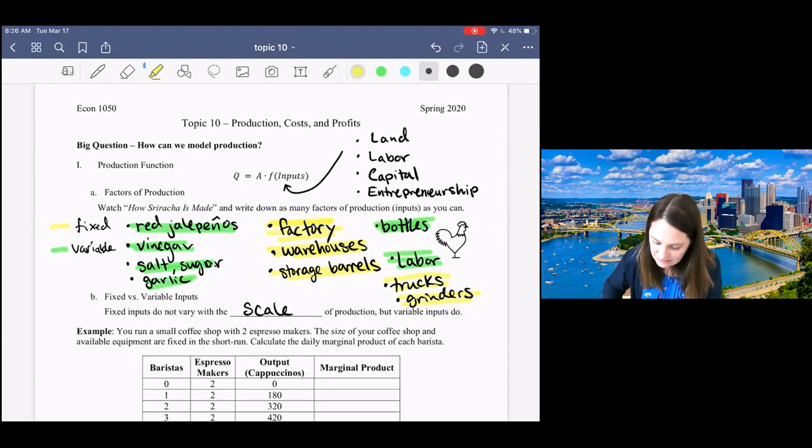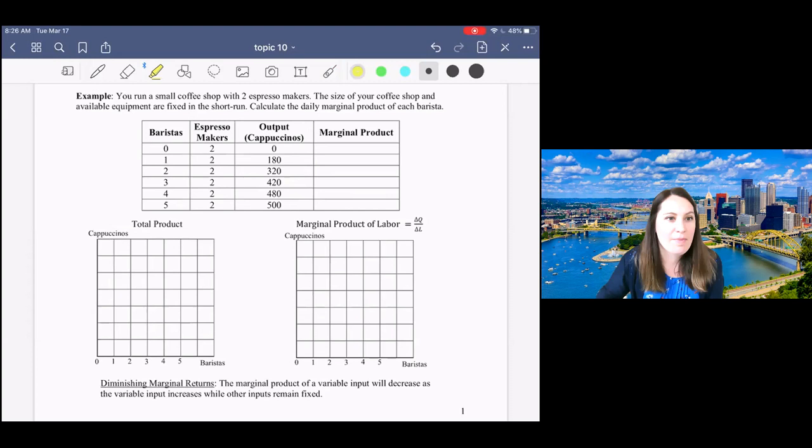So now that you understand this distinction between fixed and variable inputs, we're going to go through an example with some numbers about a coffee shop. Instead of a function to describe production, I'm going to give you this table to describe production. This table tells you the relationship between the inputs—here we have baristas and espresso machines—and output, that's cappuccinos. This table describes for any combination of inputs how much output I'm going to be producing.